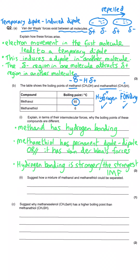The next question is a simple one you need to remember. It asks how we could separate this mixture. All that really matters is that the mixture has different boiling points, and when that's the case the answer is simply distillation — or fractional distillation if you prefer. But simple distillation is absolutely fine here.